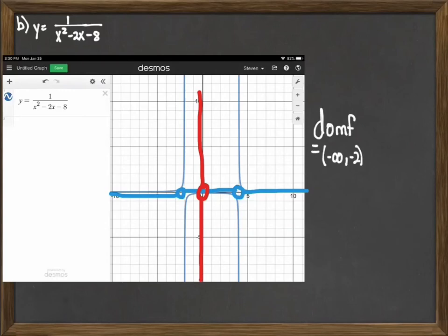So putting this together now, we can say that our domain is the interval from negative infinity to negative 2, union symbol, negative 2 to 4, union symbol, 4 to infinity. That's the interval notation way of writing it. And if you're forced to do interval notation, that's what you have to do, although that's really painful.